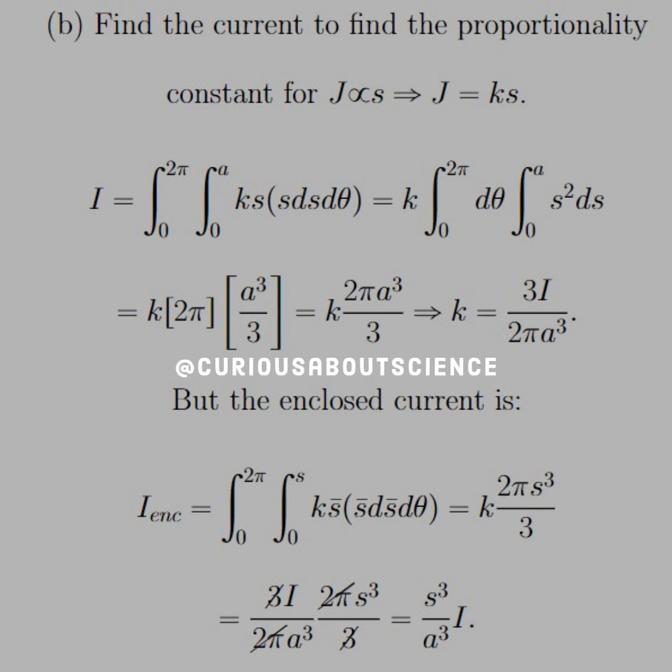and we see that we get 0 to 2 pi, 0 to A for KS, which is J, times the DA element, which is S, dS, d theta. These are integrals you've seen before throughout electrostatics. We know that we get 2 pi from theta, and we get, in the normal cylindrical coordinate system, and we get A cubed over 3 for the radial side.